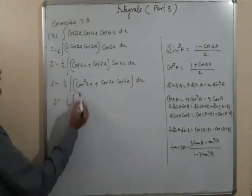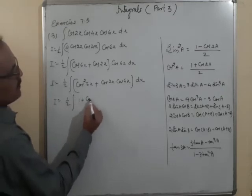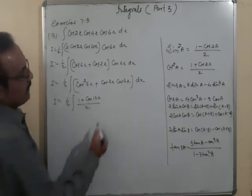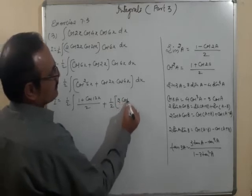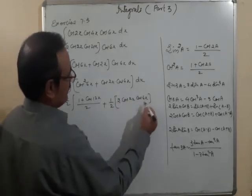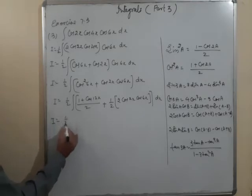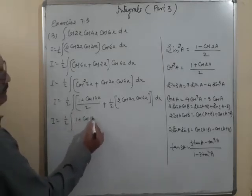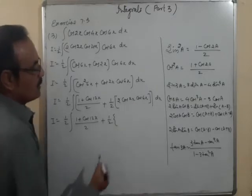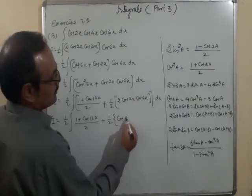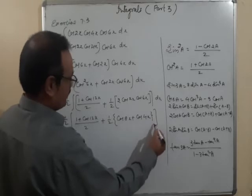For cos²6x, use the identity cos²A = (1 + cos2A)/2, giving (1 + cos12x)/2. For cos2x·cos6x, multiply and divide by 2 again using 2cosA·cosB = cos(A+B) + cos(A−B): 2cos2x·cos6x = cos8x + cos4x. So we get (1/2)[(1 + cos12x)/2 + (1/2)(cos8x + cos4x)] dx.